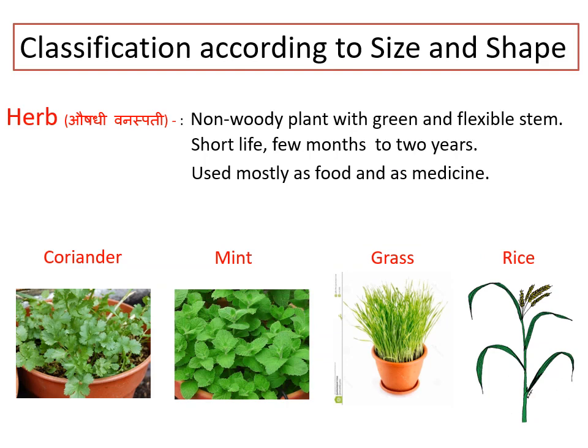Let us see the first type: classification according to size and shape. Here we have three types of plants — first is herbs, second is shrub, and third is big trees. Herbs are plants with non-woody, green and flexible stems. These plants grow from 1 to 1.5 meters in height. They have a short lifespan — that is, few months to 2 years.